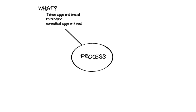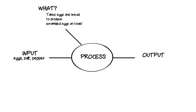The main point about a process — any process — is that it takes one or more inputs of some kind or another, weaves some kind of magic with them, and produces one or more outputs. For instance, to make scrambled eggs on toast, as input you need a couple of eggs, a pinch of salt and pepper, butter, and a slice of bread. How do you do it? You follow the method in your cookbook.